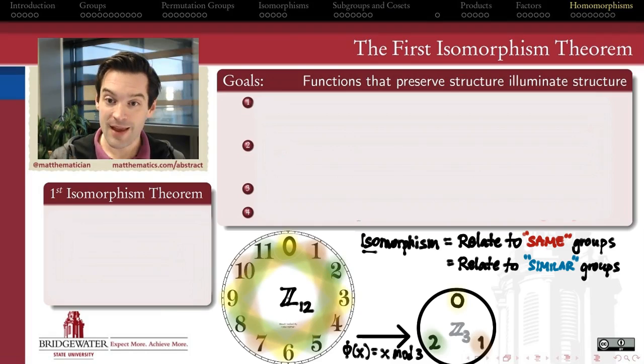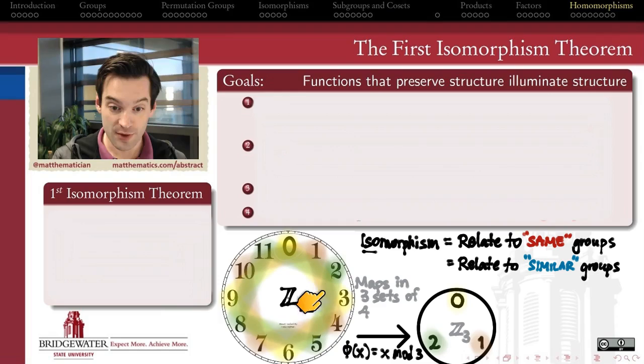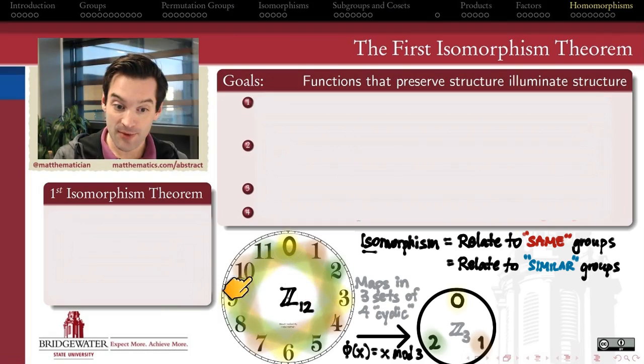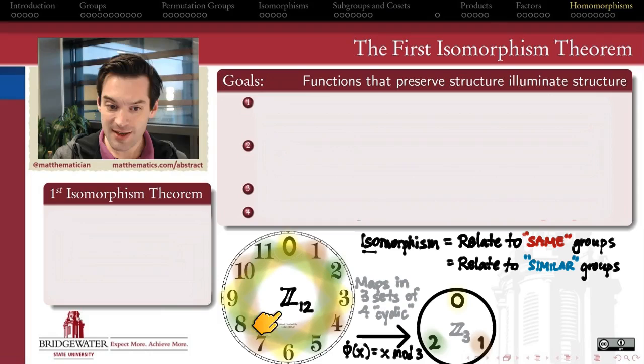There's something very illuminating about the way that this function connects Z12 to Z3. What it does is it takes and divides Z12 into three sets of four: all the pre-images of 0 (0, 3, 6, 9), all the pre-images of 1 (1, 4, 7, 10), and all the pre-images of 2 (2, 5, 8, 11). Each of those pre-images has the same number of elements—they're in bijection with one another. Moreover, they're also sort of cyclic in a way. The subgroup of elements that maps to 0 was indeed a cyclic group generated by 3, or if you like, generated by 9. These other sets aren't exactly cyclic because they're not subgroups, but they're awfully similar-looking to the cyclic subgroup 0, 3, 6, 9.